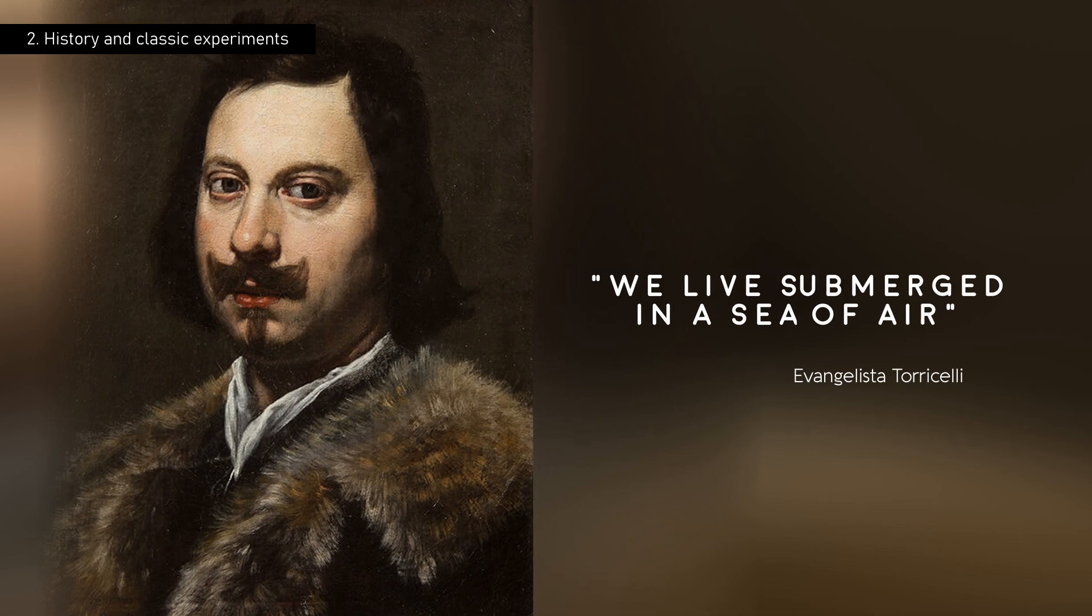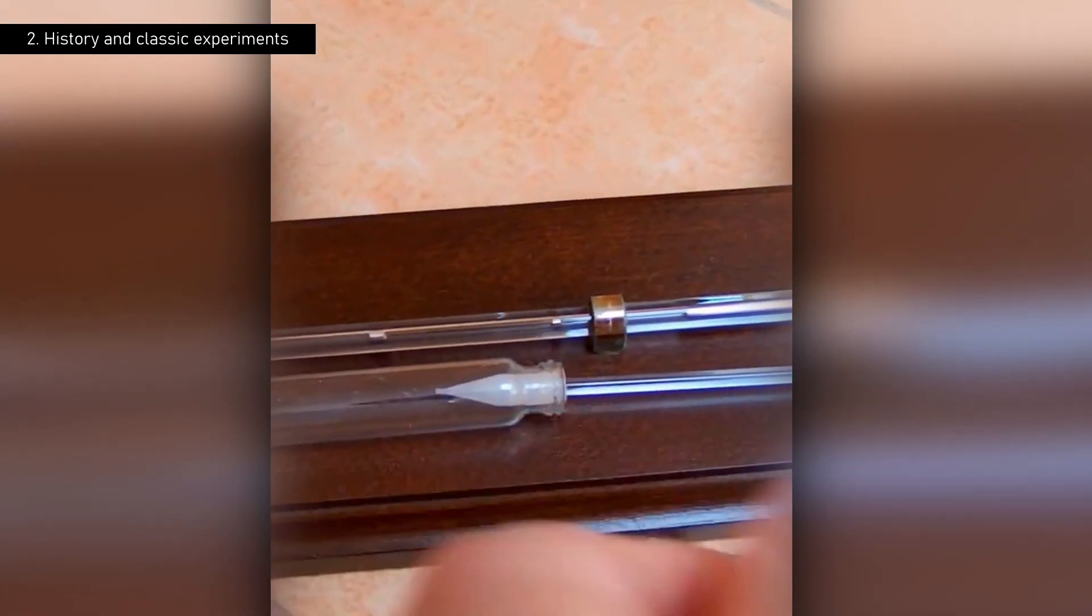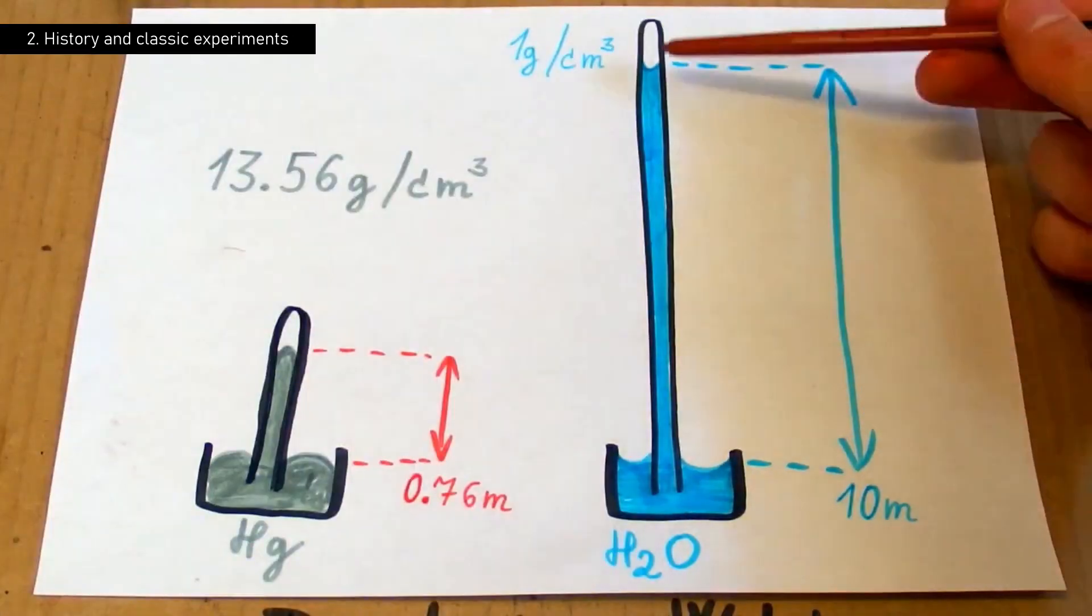The choice of mercury was key in this experiment. Its higher density allowed for a more compact device. Compared to Berti's experiment, which required a 10 meter water column, Torricelli achieved the same effect with just 76 centimeters of mercury.